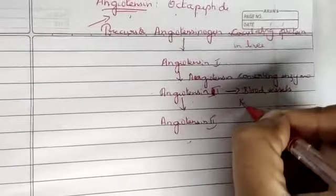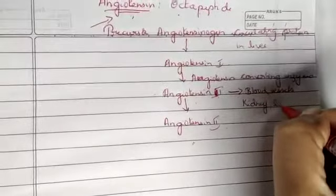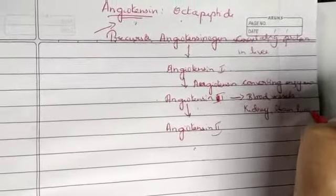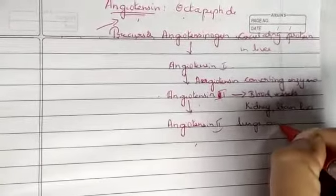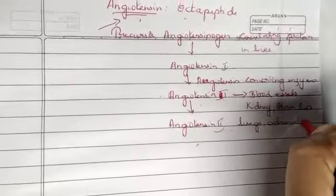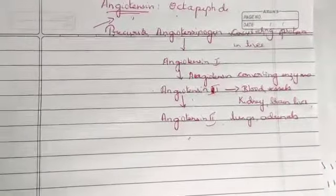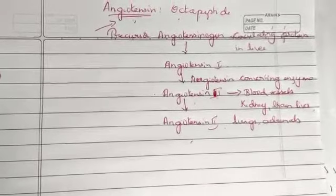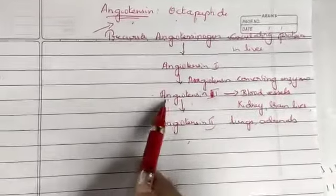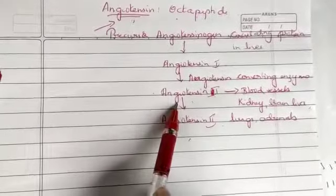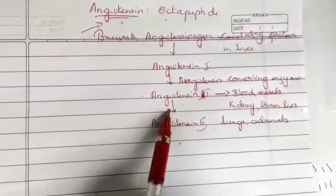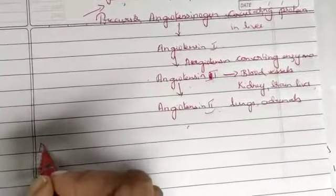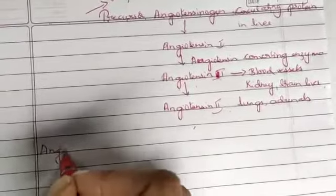Angiotensin 2 is most commonly seen in blood vessels, kidney, brain, liver, lungs, and adrenals — these are the sites of distribution of angiotensin 2. It is a potent agent normally present in the body, and it normally acts via angiotensin receptors.